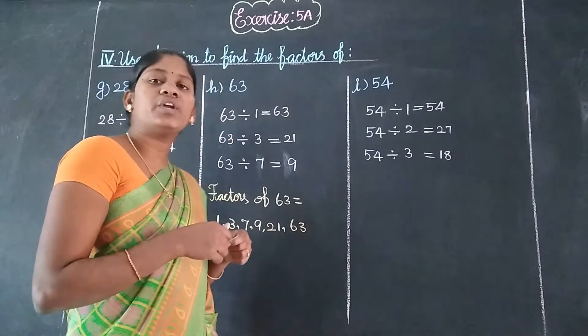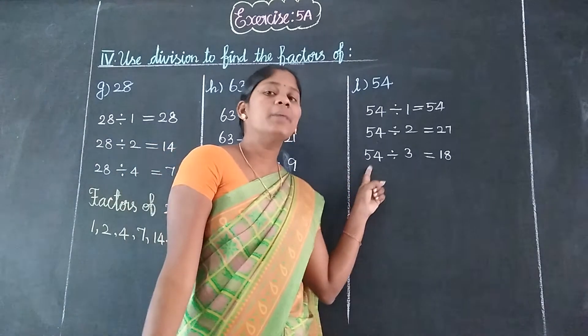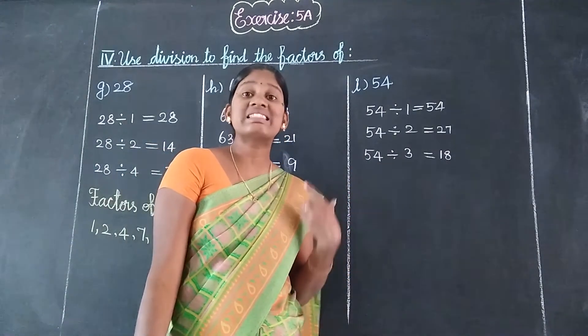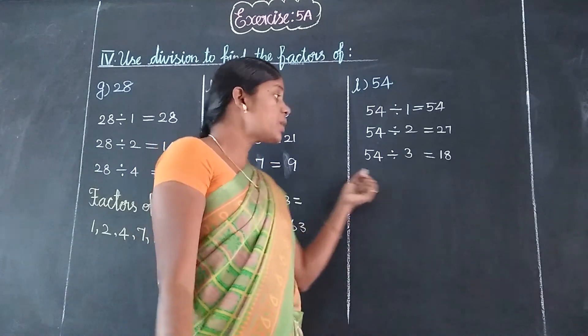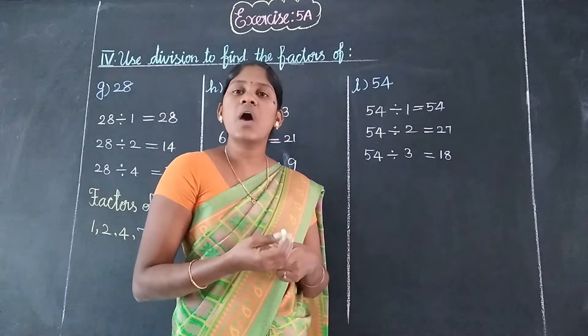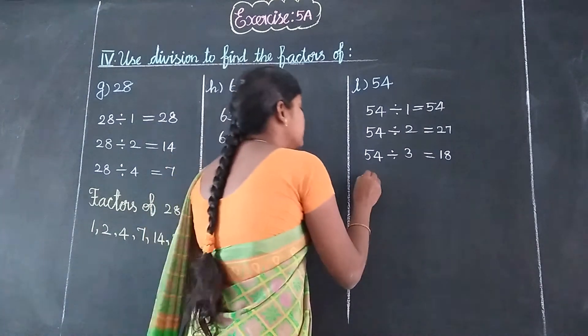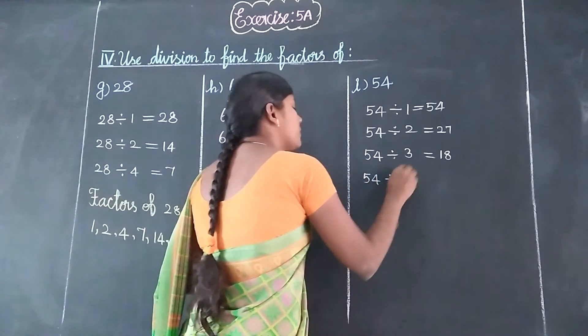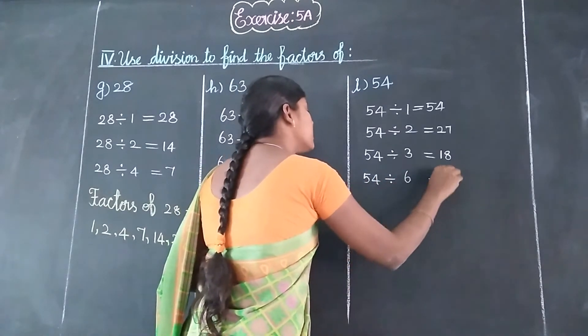Next, 4 table. Does 54 divide by 4? One 4 is 4, balance 1, that's 14. Four 4s are 16. So 4 table doesn't work. 5 table? No. 6 table? Yes. Nine 6s are 54.